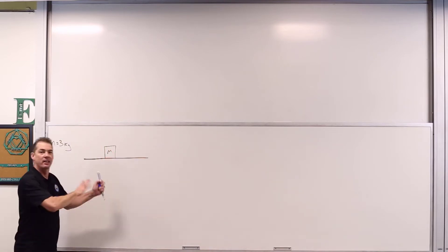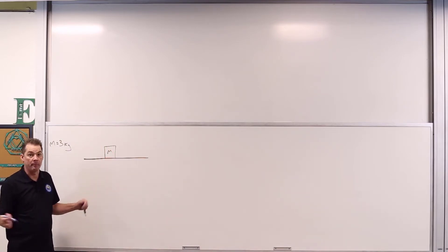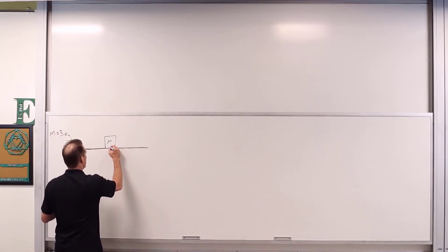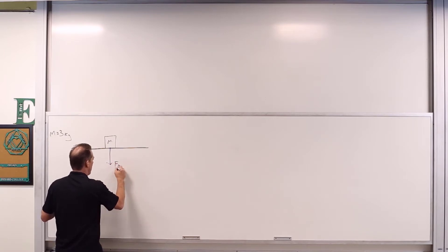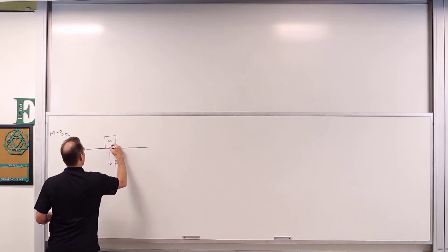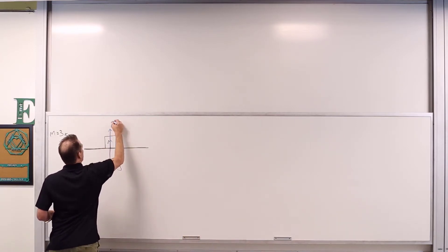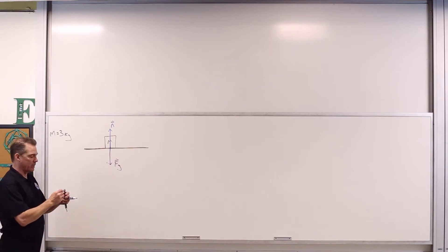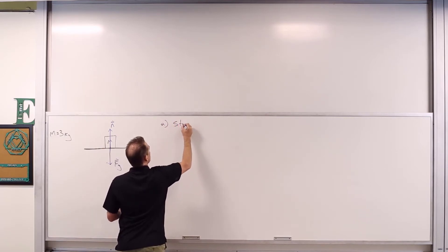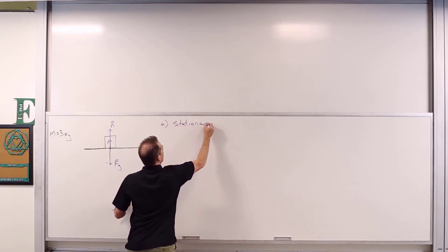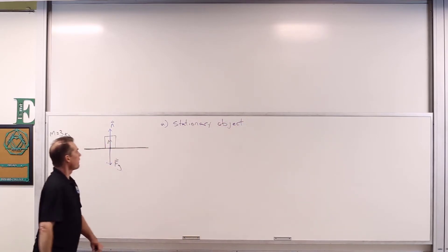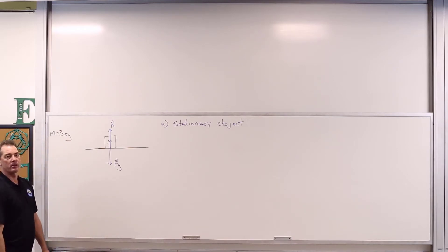It's always nice when we're starting to analyze forces to draw a little diagram — a depiction of the object and the forces acting. So we've got ourselves the gravitational force, F sub G hat, and we can go ahead and throw in a normal force here, N hat. In part A, we're told that this object is stationary.